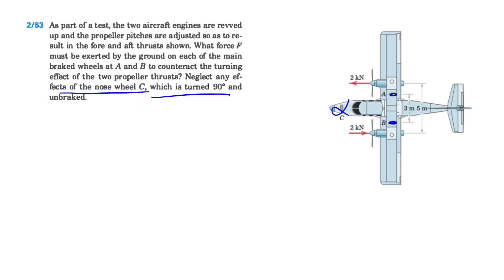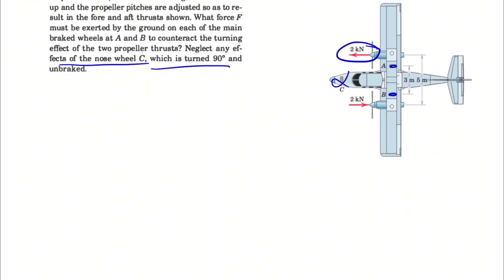As we can see, these two forces are making a couple, and what's going to happen is that the airplane is going to turn in this direction, which we have to avoid by putting two different forces at point A and B in order to cancel the effect of these two.